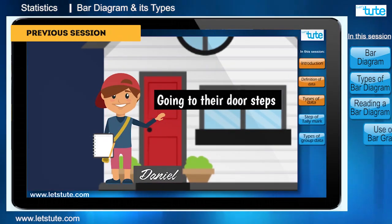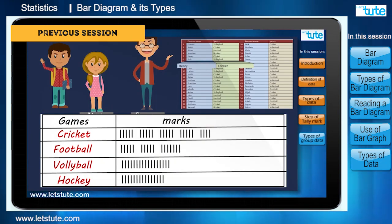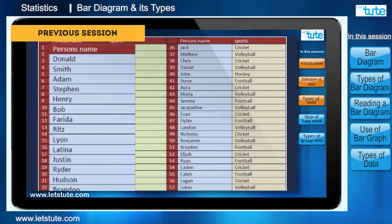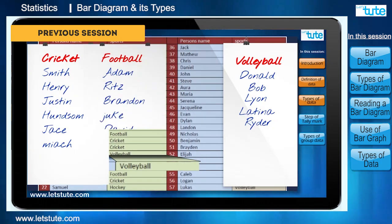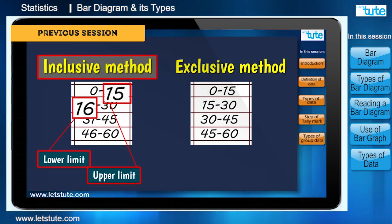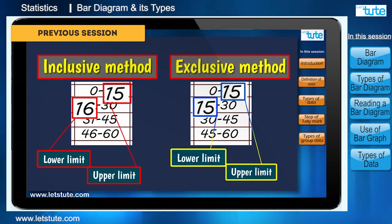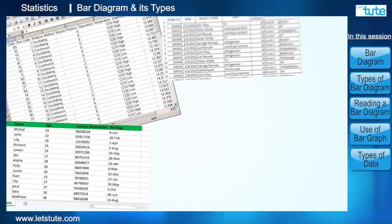We started from collection of data and types of data, then learned a way to organize that data using a simple technique known as tally marks. We also learned how we can divide this data into grouped data and ungrouped data. For grouped data we also learned about the inclusive class and the exclusive class. This is what we covered in our previous session.